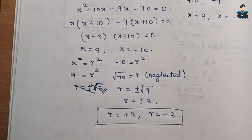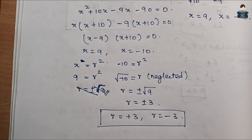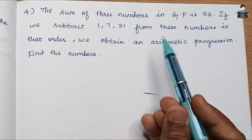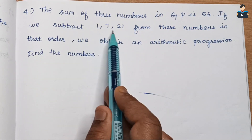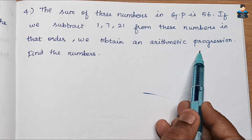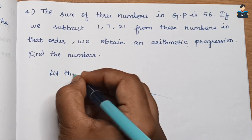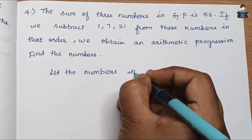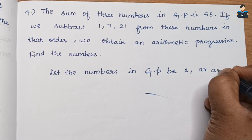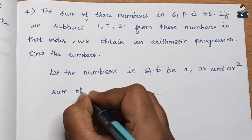So the common ratio is +3 or −3. That completes question 3. Now question 4: the sum of 3 numbers in GP is 56. If we subtract 1, 7, and 21 from these numbers in that order, we obtain an arithmetic progression. Let the numbers in GP be a, ar, and ar².